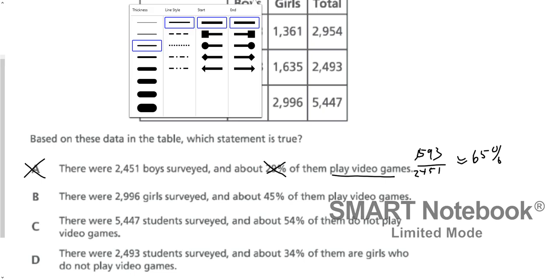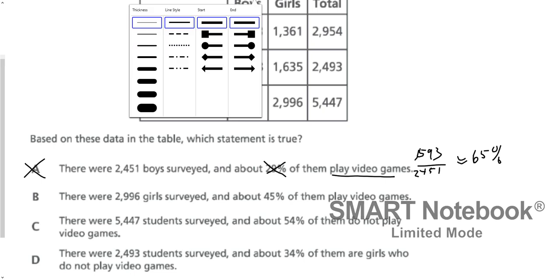The next choice says there were 2,996 girls and about 45% of them play video games. Girls who play video games: 1,361 out of a total of 2,996. On a calculator, that comes out to about 45.4%. So that is the correct answer.